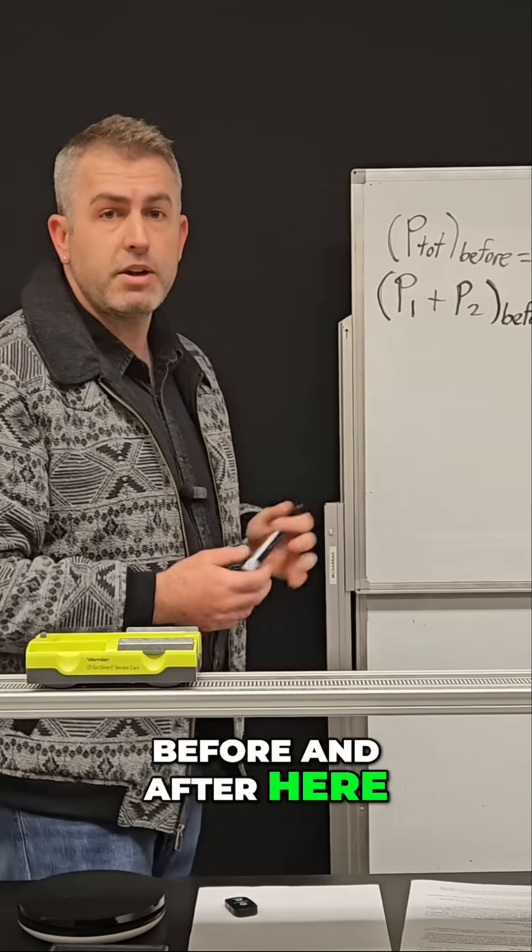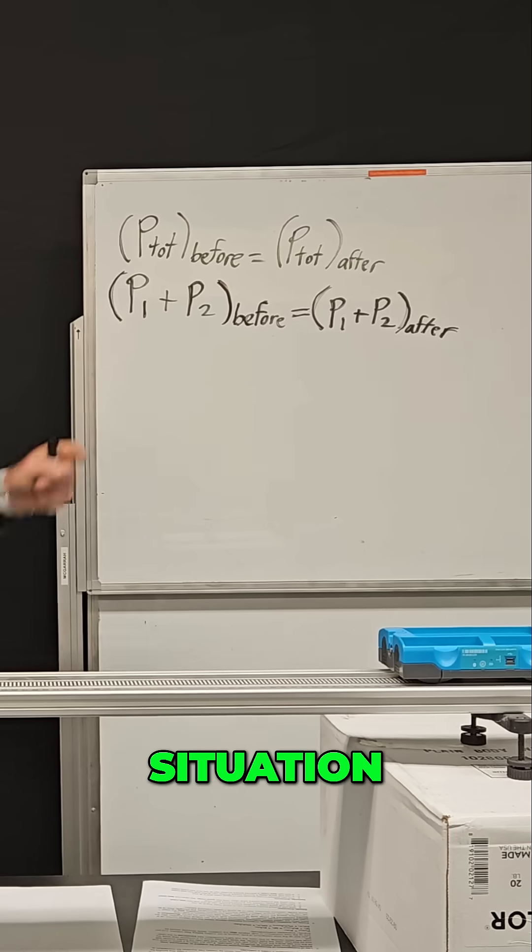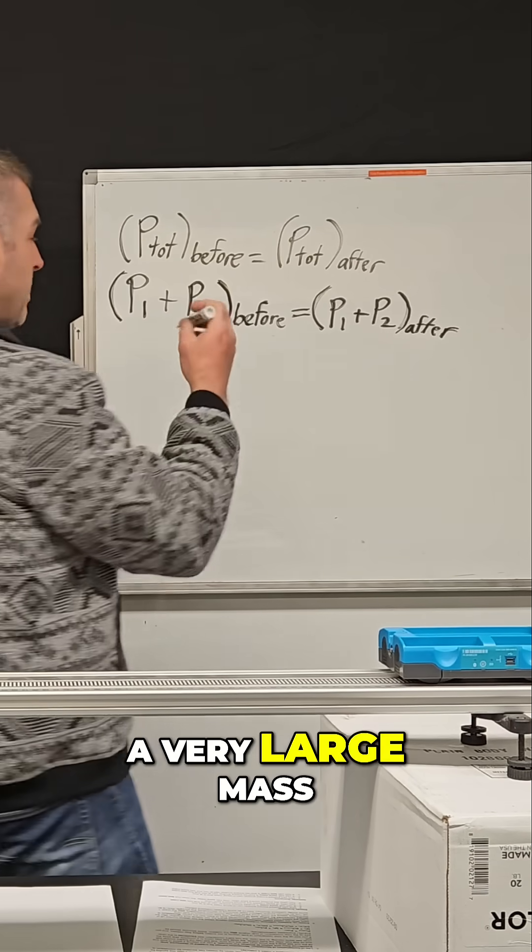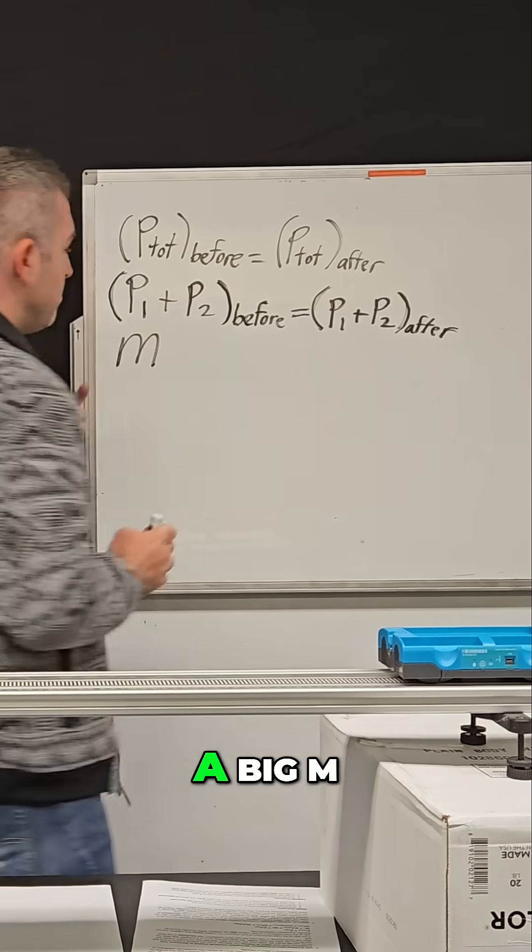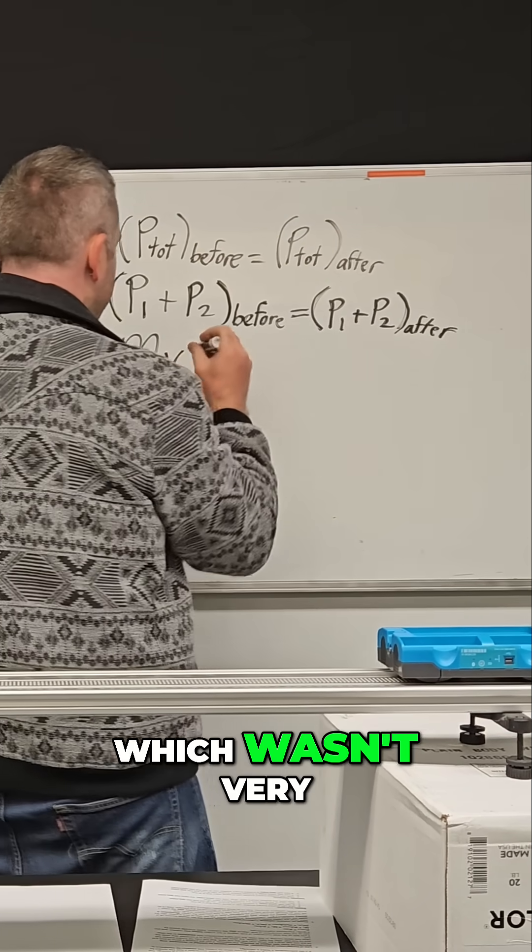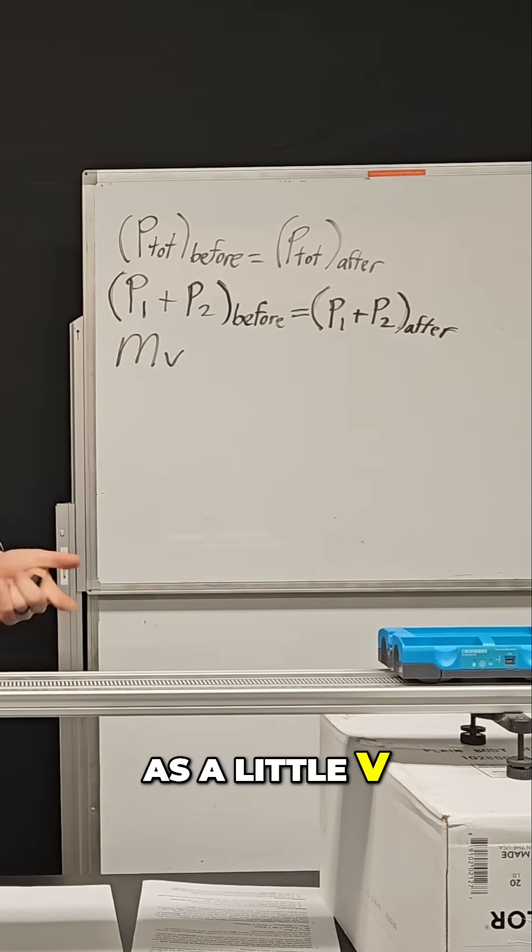Let's look at the before and after here. In the before situation, the yellow car was moving to the right, so we know it had a positive momentum. It has a very large mass, so I'm going to represent that as a big M, and it was moving at some velocity which wasn't very large, so I'll show that as a little v.